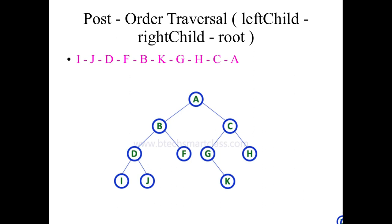Once you visit the root node D, the left part of the node B has been completed. Then you have to visit the right child of the node B, which is F. Once you visit F, the left and right side of the B node has been completed.